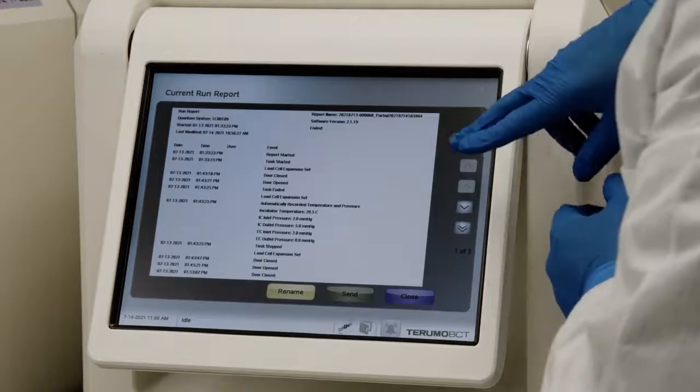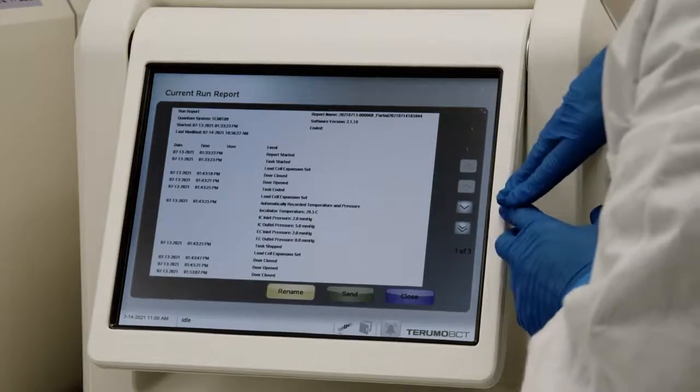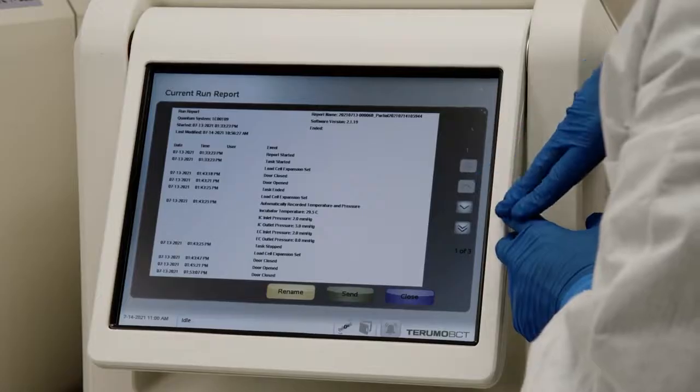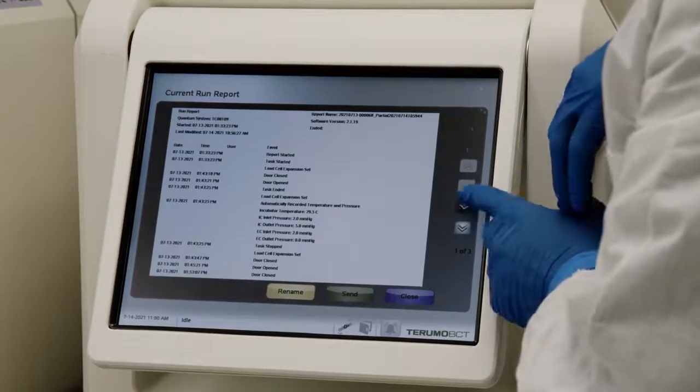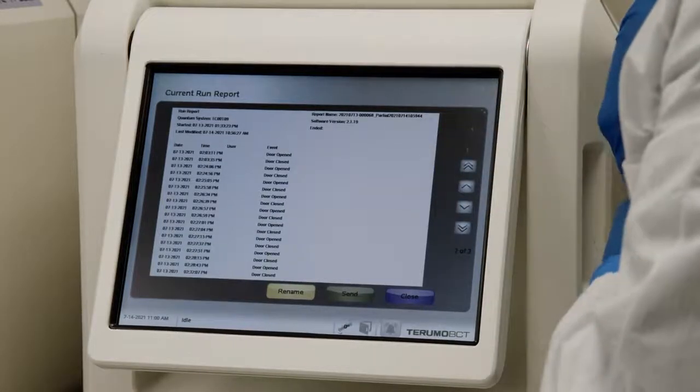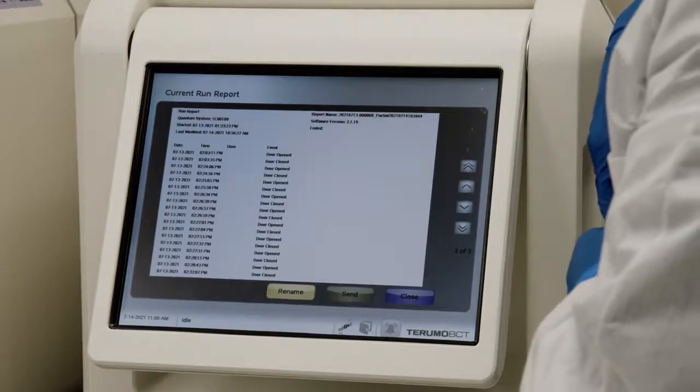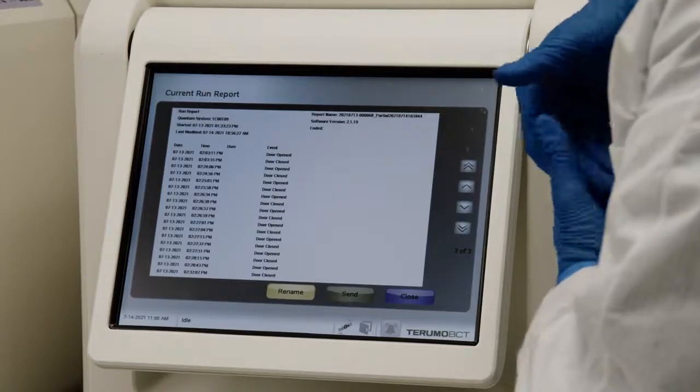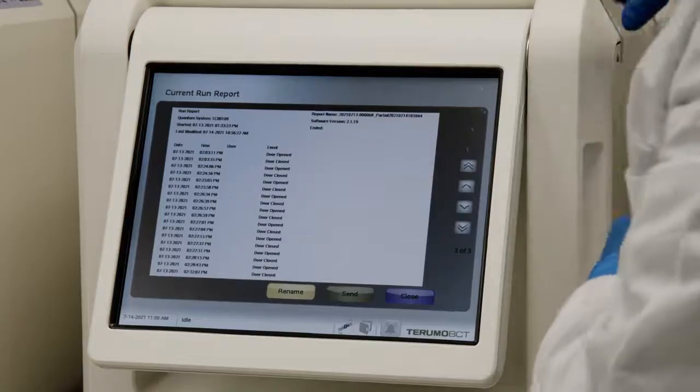This run report contains all information about a single run, including each task that was performed and any modification, any alarms, and all sign-in errors that occur during the run. You can also view stored runs here. If you're not an administrator however, you can only view them and not edit any of these reports.